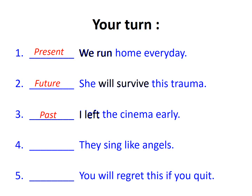'They sing like angels' — 'they sing' is in the present tense. It suggests that you could hear them sing any time and they would sound great; it's ongoing. And finally, these are quite stern words: 'You will regret this if you quit' — 'you will regret this' suggests that if in the future this person gives up, they will feel sad about it.